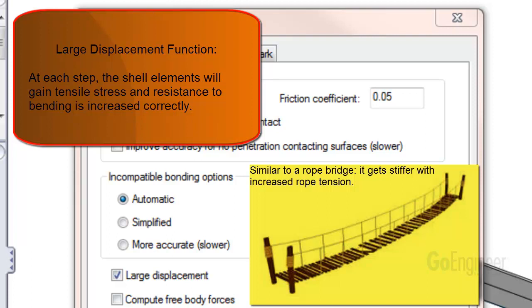At each step, the thin shell elements start to experience in-plane tensile stresses due to the main beam load, which increases their resistance to bending. Once this happens, the algorithm can solve the simulation properly.